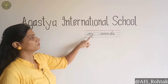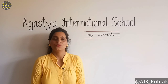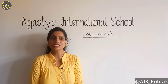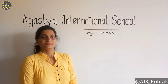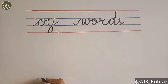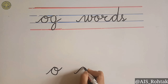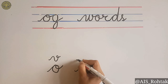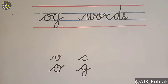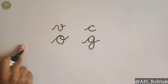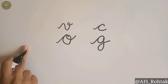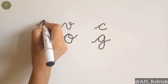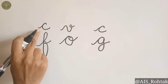O words. When we have the sound of O in a word, then we use the letter O. O is a vowel and G is a consonant. When I add any consonant before a vowel, it will become a CVC word. I am adding here F. F is a consonant. Now it is a CVC word.